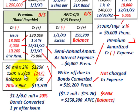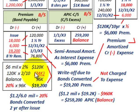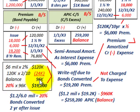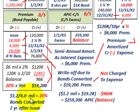Over the first two years, we amortized $24,000 ($18,000 plus $6,000). So the balance remaining at the end of the second year before conversion is $120,000 minus $24,000, which equals $96,000 still to be amortized. Since 20% of the bonds are being converted — $1.2 million divided by $6 million — we take 20% of the $96,000 remaining balance, which gives us $19,200. These are the bonds converted after the second year.